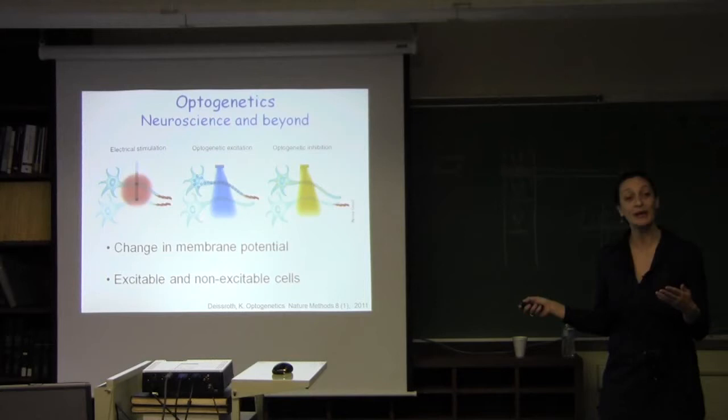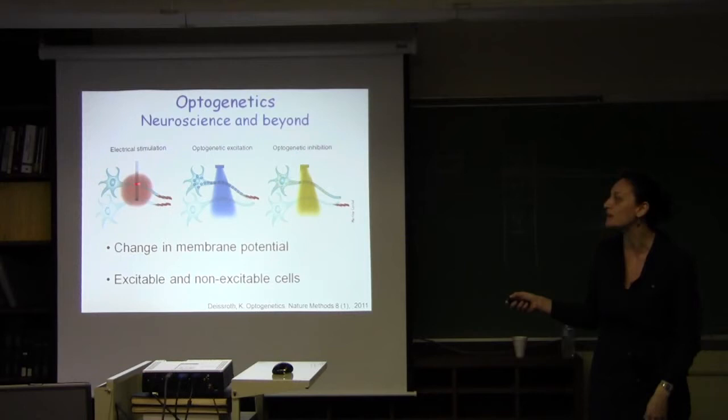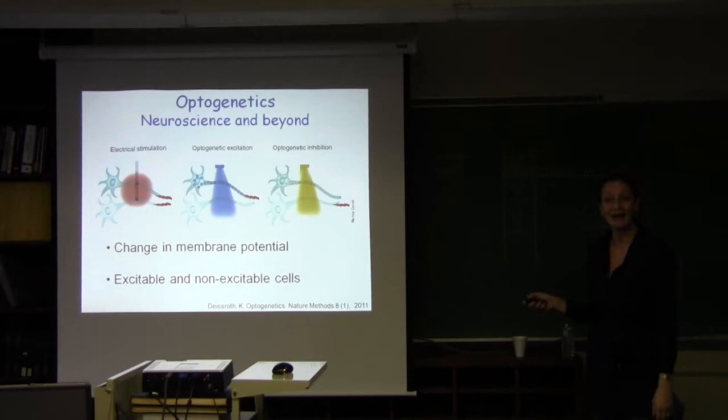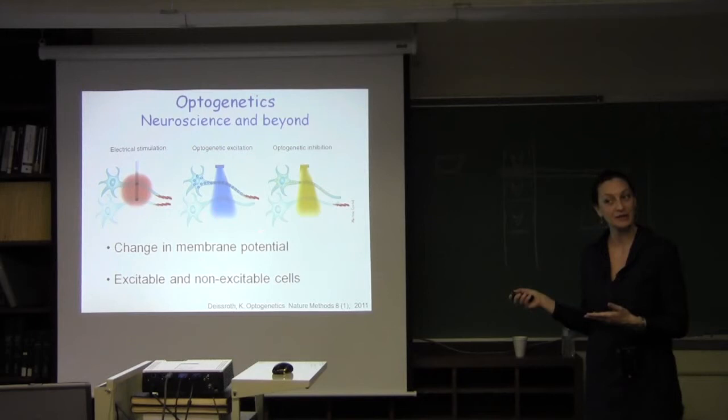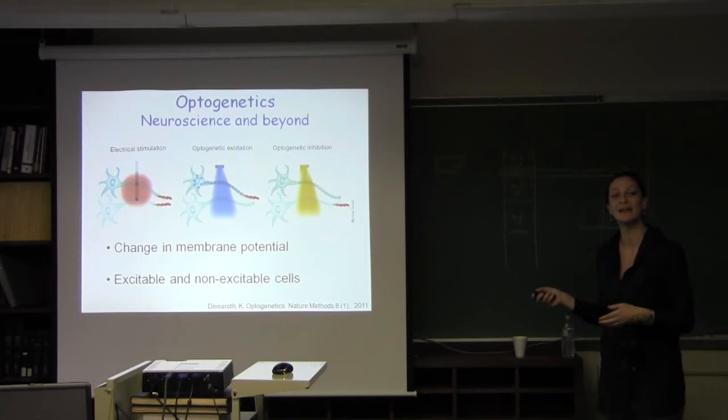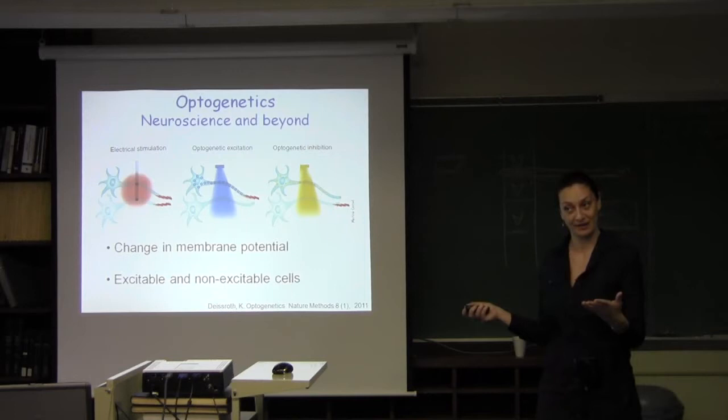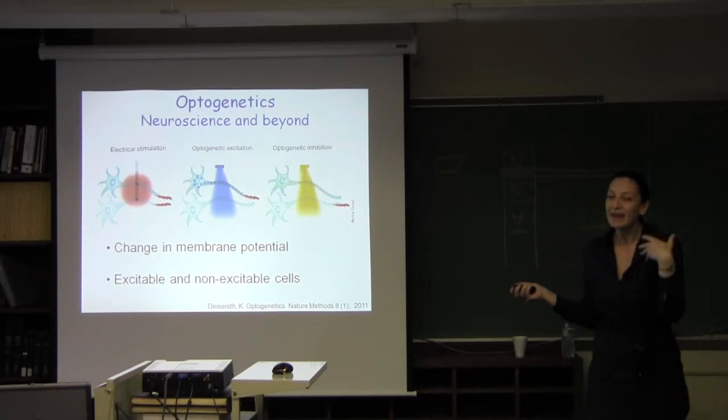Optogenetics started with neuroscience because those are excitable cells that could be switched on and off depending on the light. For example, you could stimulate the neurons with red light. Or using blue light and making use of proteins that are sensitive to blue light, you can excite nerve cells. In contrast, using yellow light, you can inhibit the transmission of signal between nerve cells.